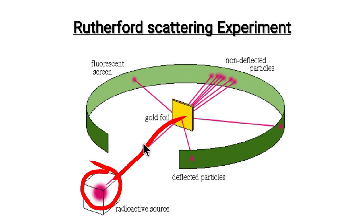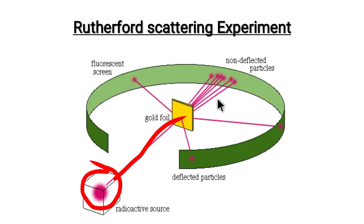These are the alpha particles. Most of the alpha particles pass through the gold foil undeflected. Some of the alpha particles were deflected by small angles. A few alpha particles were reflected back along their original path.